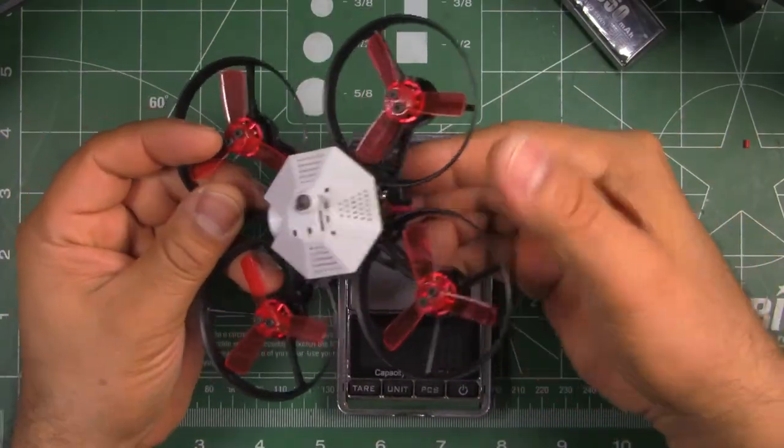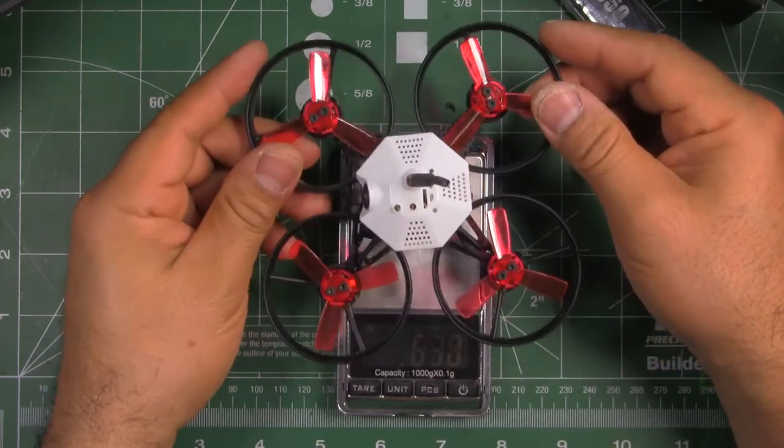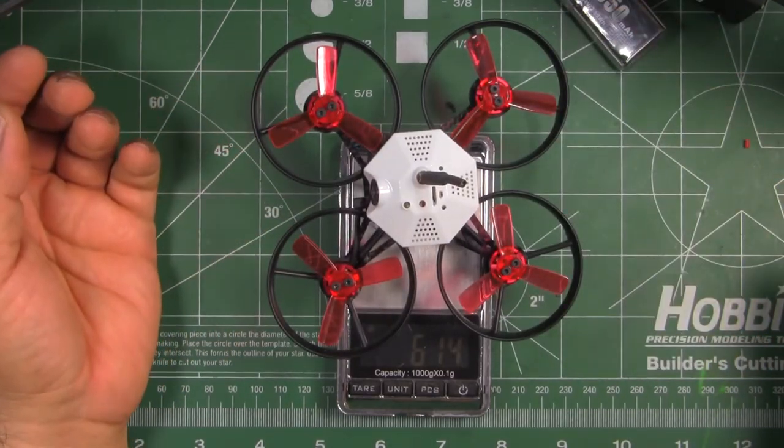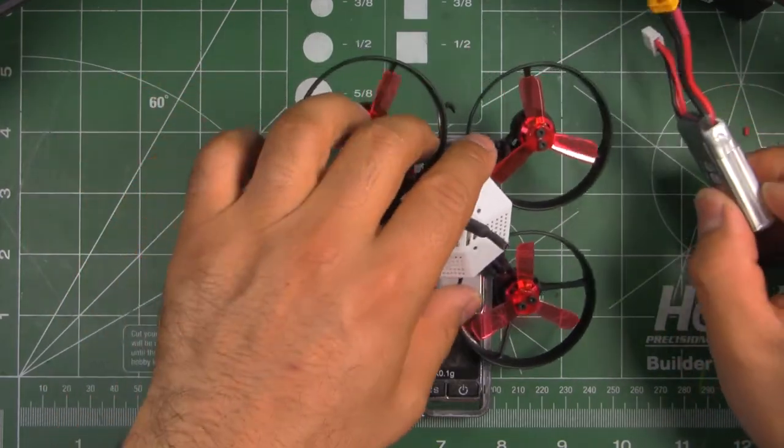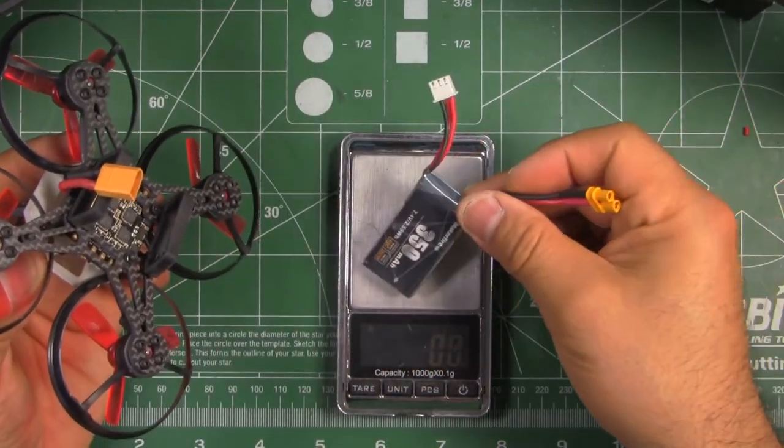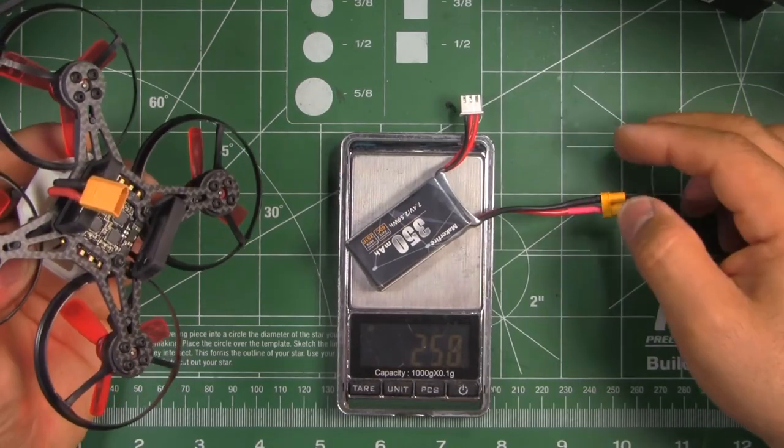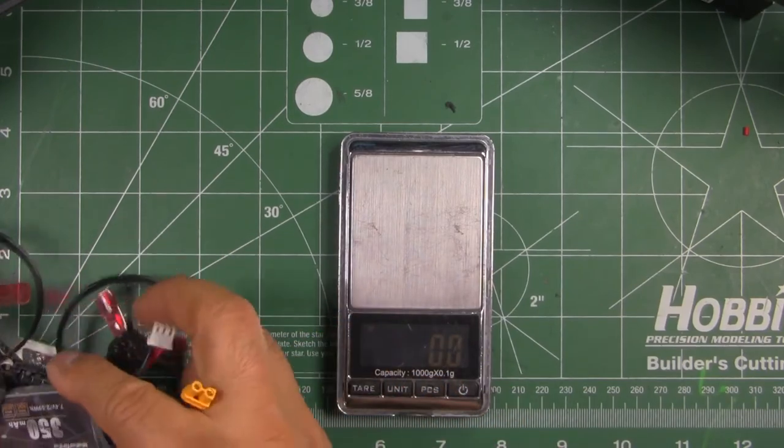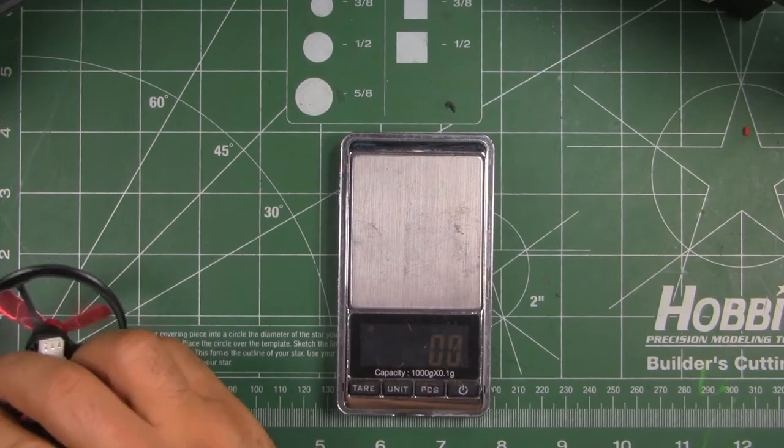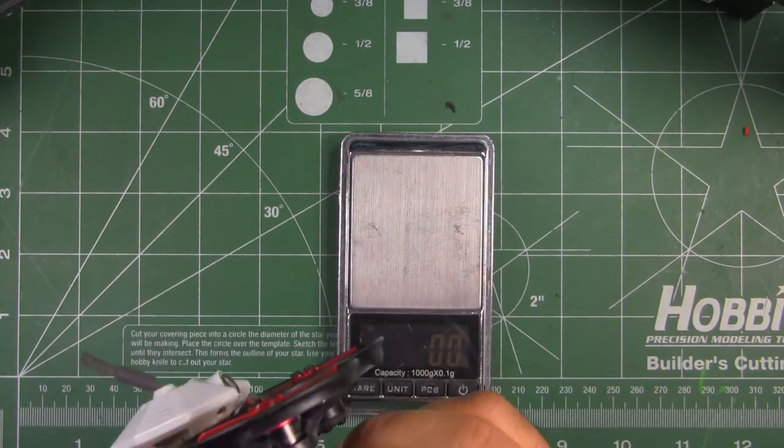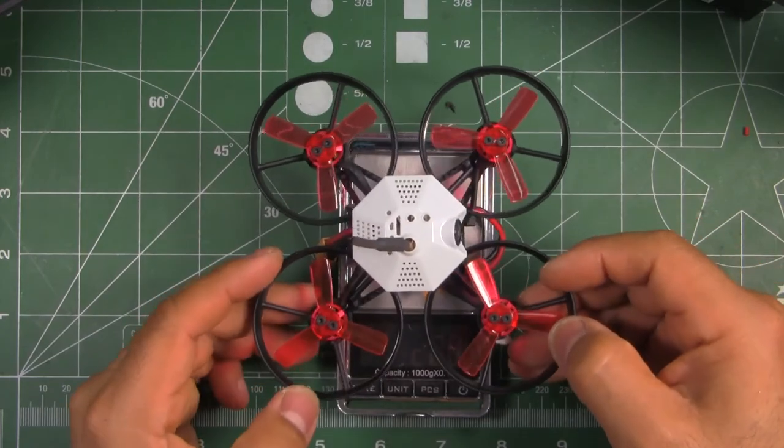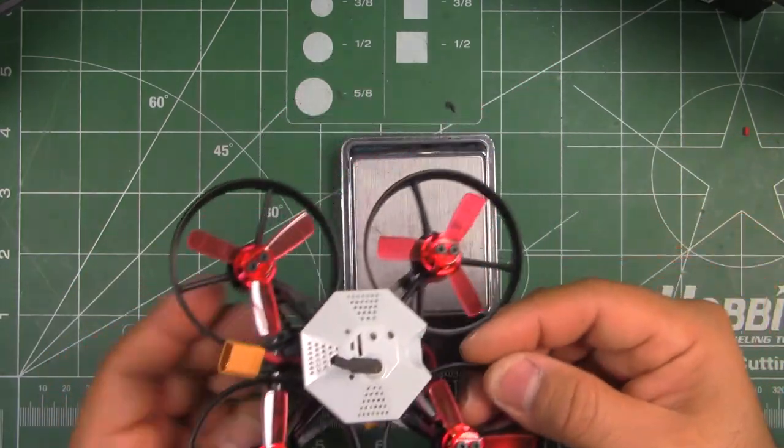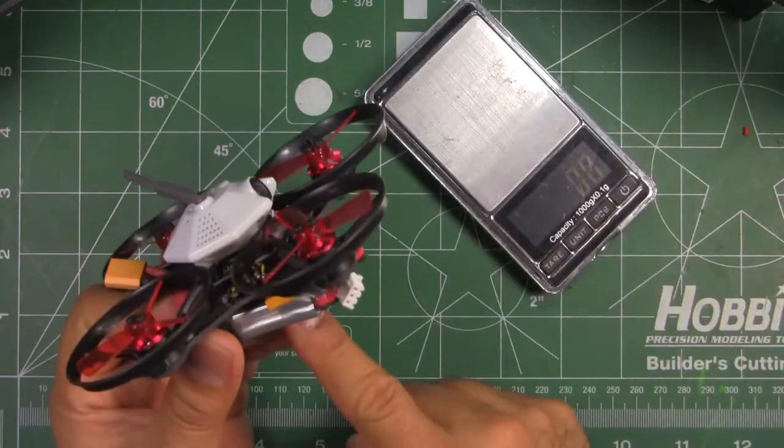So let's check the weight. Without the battery, it's 61.4 without the battery. And the battery weighs 25.8. So not that bad. The weight is pretty reasonable. It's not super light, but it's not that heavy either. So 87.1 ready to fly. So not bad. That's with the 350 milliamp battery.